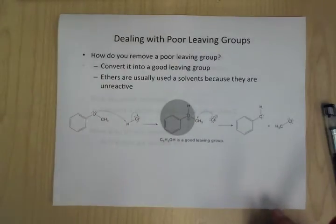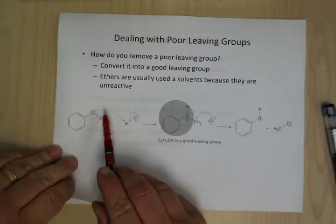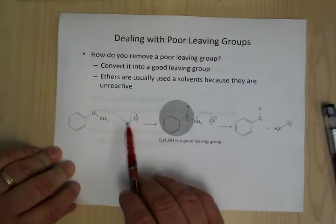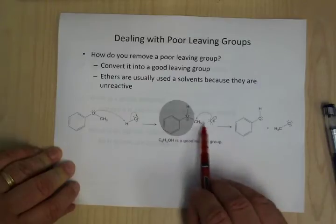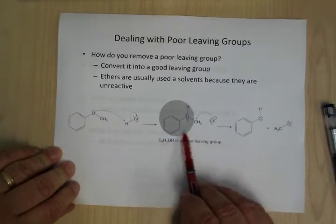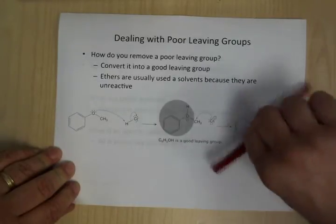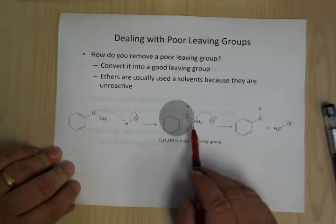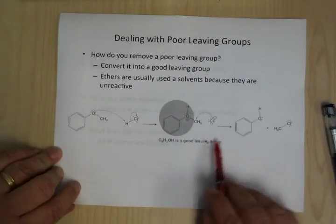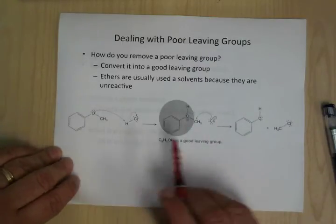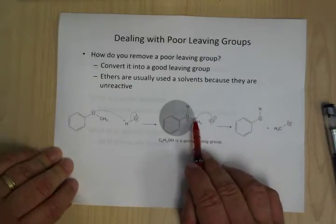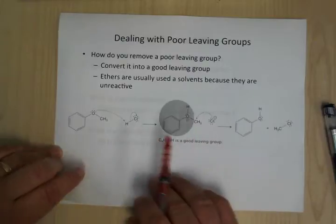This is also a way that you can break apart ethers. If you convert it — you get the phenol here — those two electrons make a good leaving group, because all it needs is those two electrons to complete its lone pair. It has lots of incentive to leave. So even a chloride can come in, do an SN2 attack and kick that away.